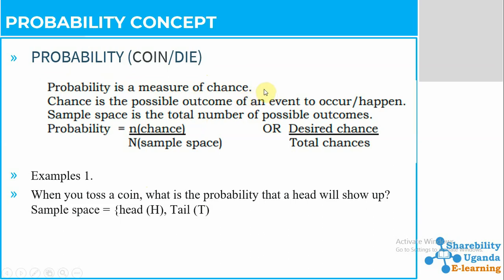So in probability we are going to deal with the chances and the sample space. Probability is the measure of chances — you are trying to measure your chances, like how many goals you are expecting or whether you are expecting a win. The possible outcome is the result you are expecting. The sample space is the total number of possible outcomes.